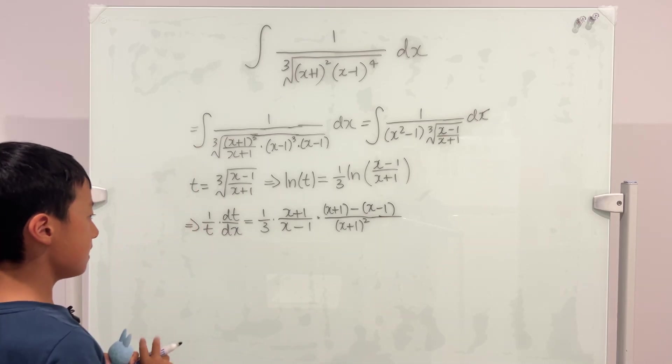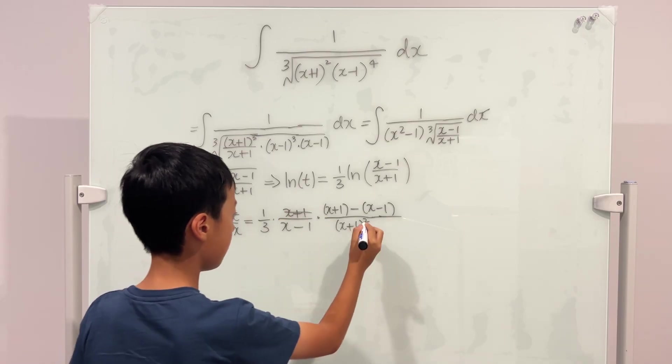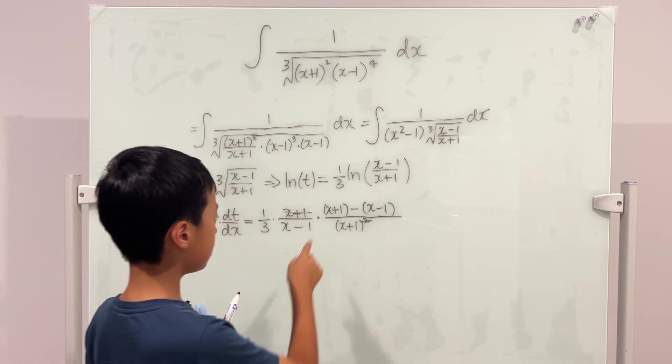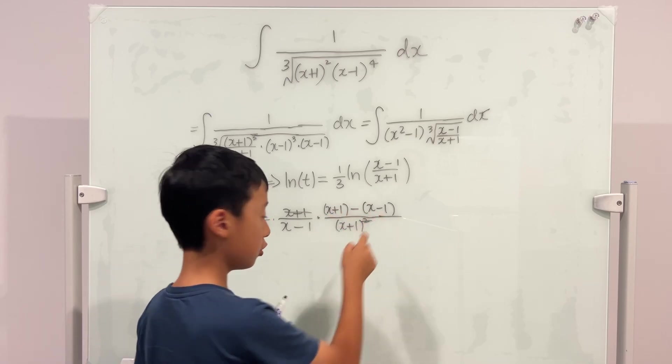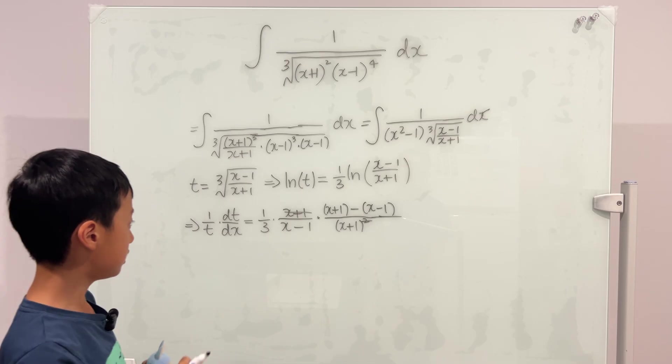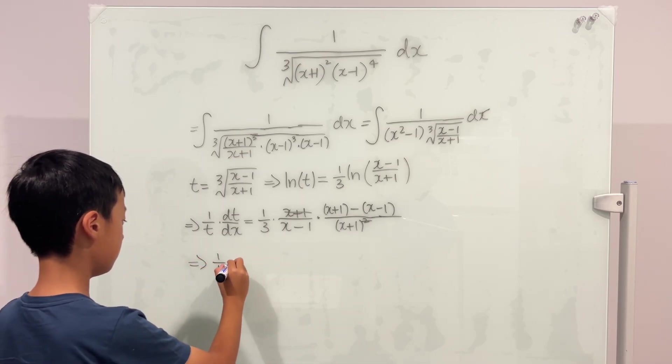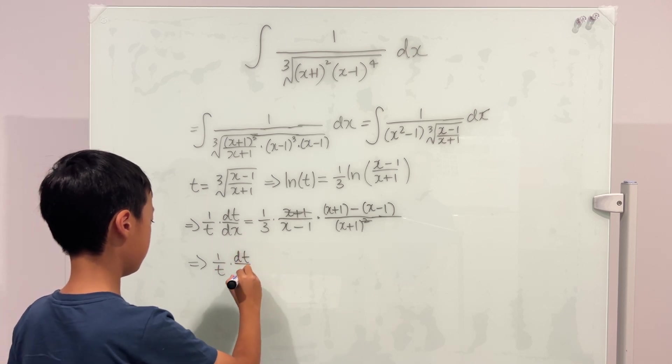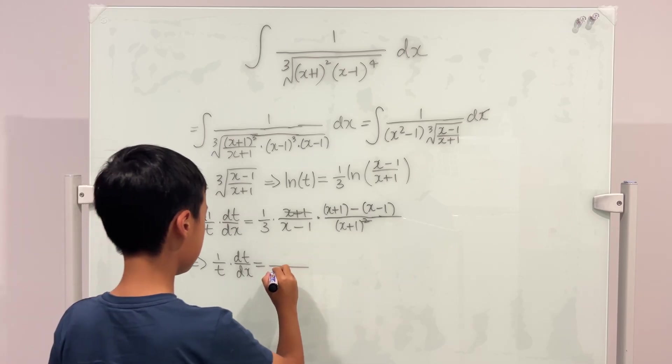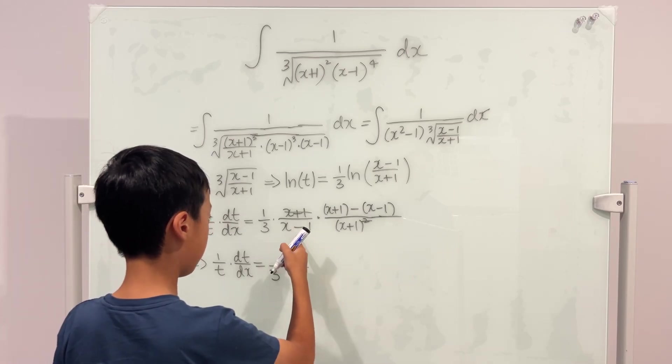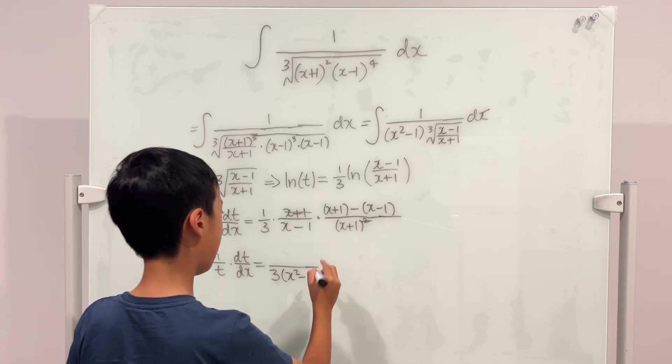Let's see, there's a cancel, very nice. Let's look at the top: x and x cancel also, but 1 and 1 creates a 2. So we know that 1 over t times dt over dx is equal to, the denominator is 3 times x minus 1 times x plus 1, which is x squared minus 1, and the top is 2.